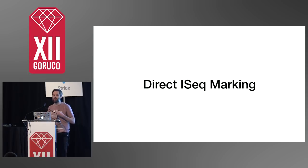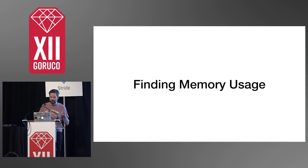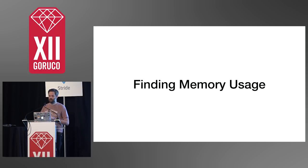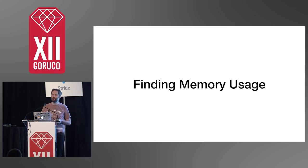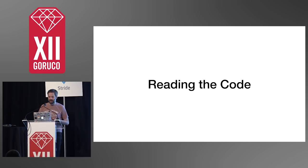We can use that knowledge in different contexts and maybe in our own applications. The first thing we need to do when dealing with memory is figure out what our memory usage is. MRI Ruby — CRuby — is written in C, so we need to be able to find memory usage in C-based programs. There are two ways I typically go about this. The first way is not very good — it's a very bad way of finding memory issues — and that is reading the code. This is the worst way to find a memory issue in your program, but sometimes you have to read code.